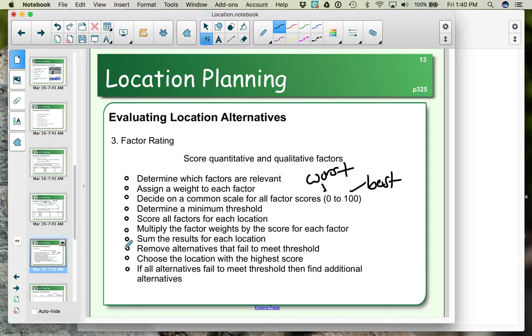Then we're going to see how these different locations compare in terms of the scores. Before you do any calculations though, you should set a minimum threshold, because if you have no location that exceeds the minimum, that's when you go back to the drawing board and start evaluating brand new locations. You scrap all the choices. So let's look at how this works.